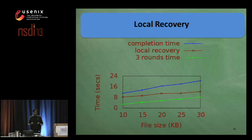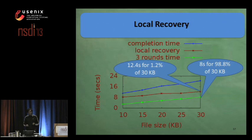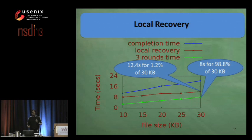Finally, we show the time taken for local recovery. Local recovery dominates the dissemination completion time. For example, while disseminating a 30-kilobyte object, the first three rounds of dissemination take only 8 seconds to disseminate most — about 98.8% — of the object.